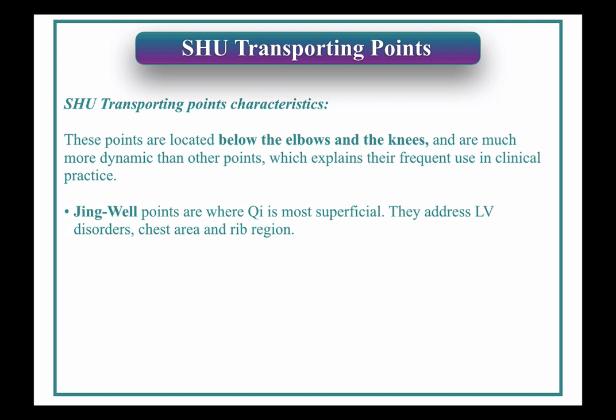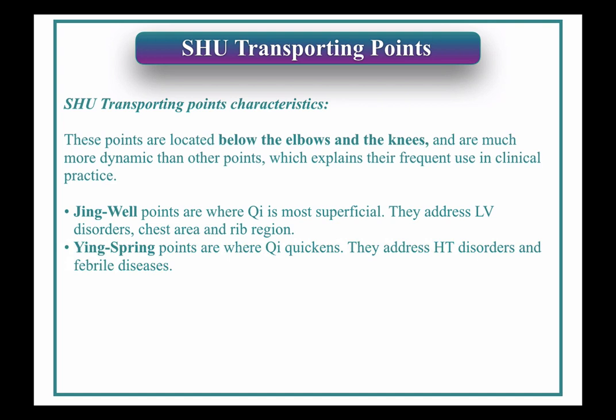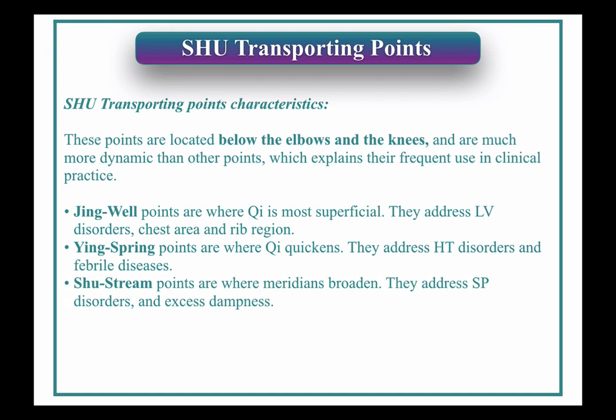The next category are the Ying Spring points, which are a little bit higher on each limb than the Jing Well. Those are where the Qi quickens. They address heart disorders and febrile diseases — very fire points. The Shu Stream points, which are a little bit higher on the limbs, are where the meridian broadens or widens. They address spleen disorders and excess dampness, which is the correlation because the Shu Stream are very earth points.